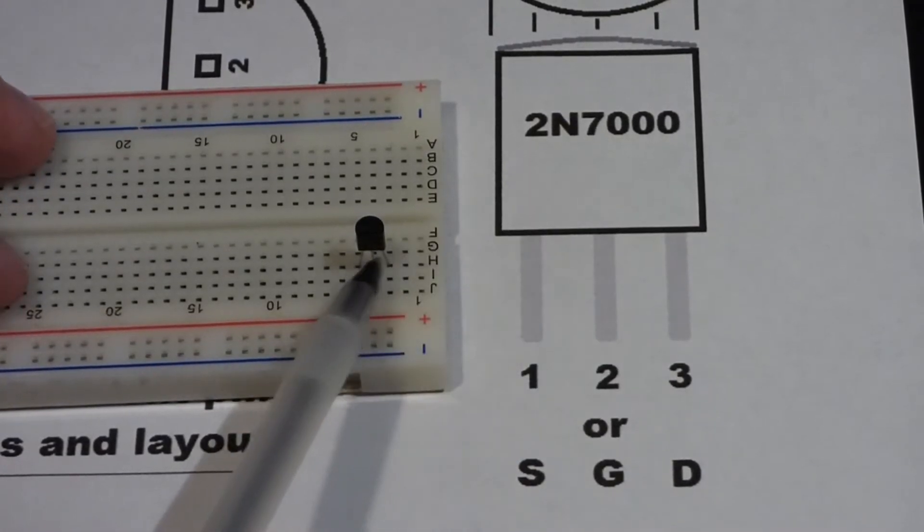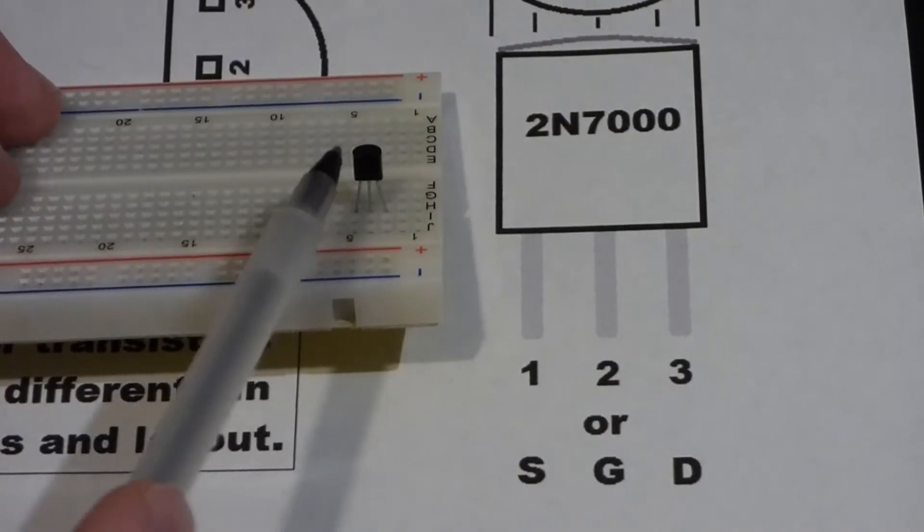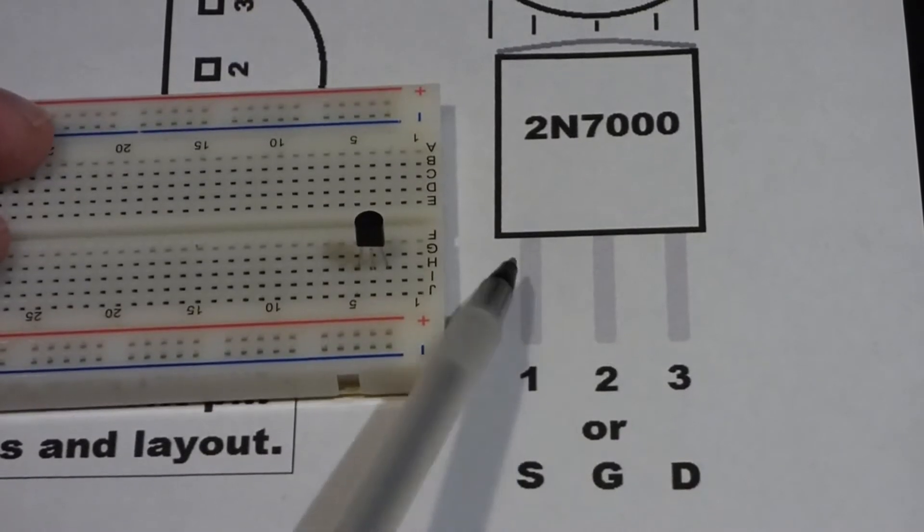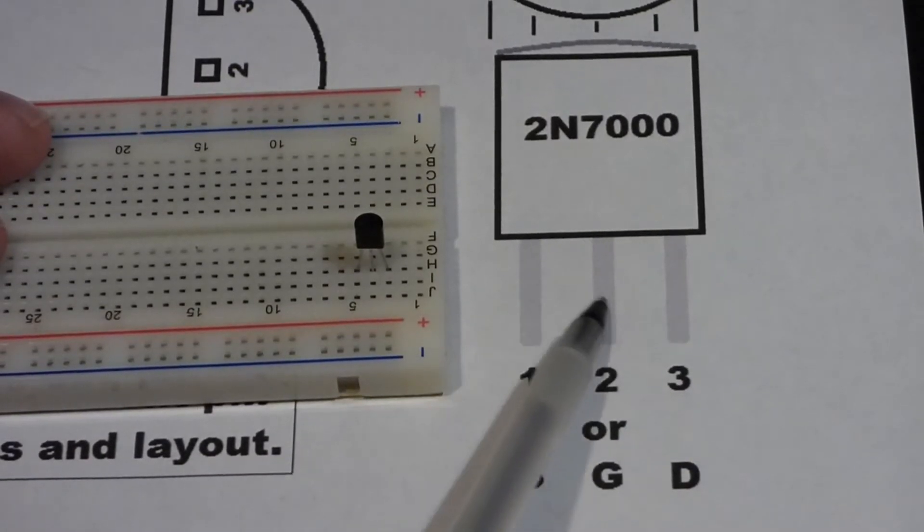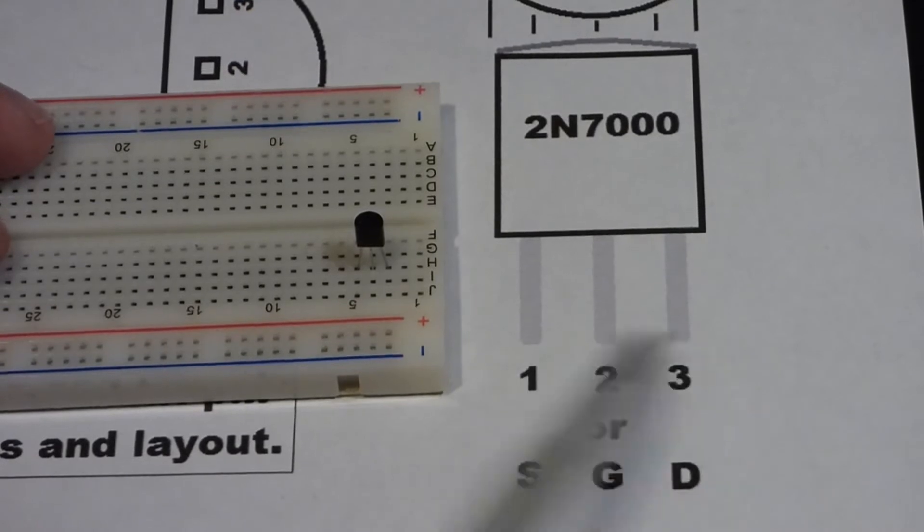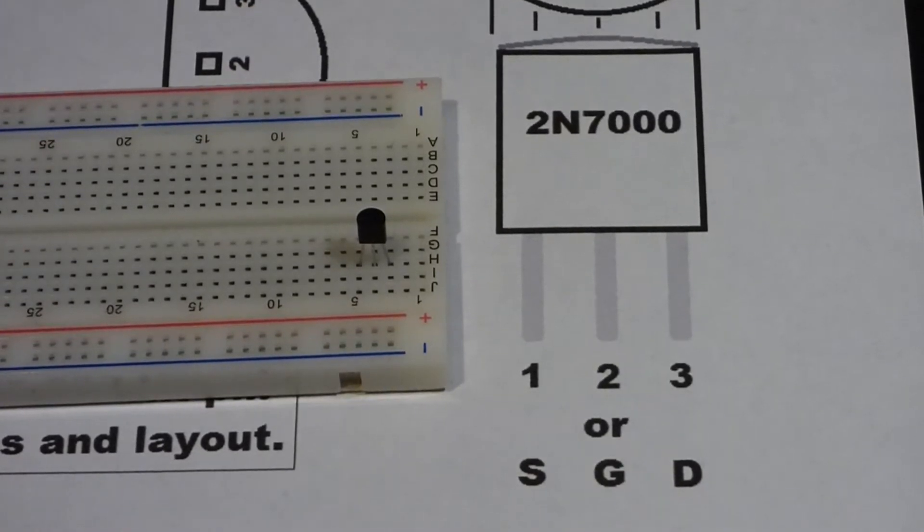but this shows you when you're looking at the flat side here. I have the flat side towards the camera right now. The pin on the left is one, middle is two, and the one on the right is three. That's fairly standard.